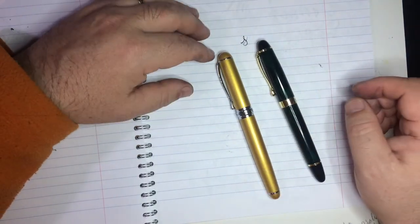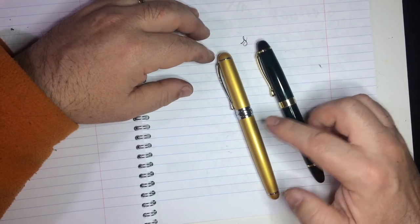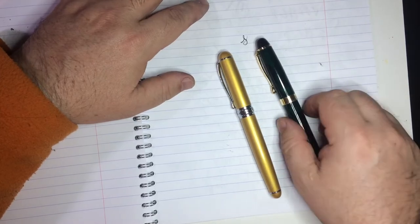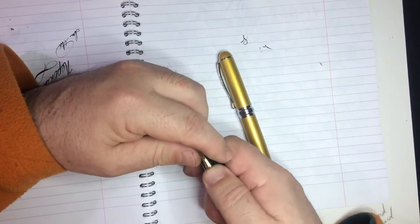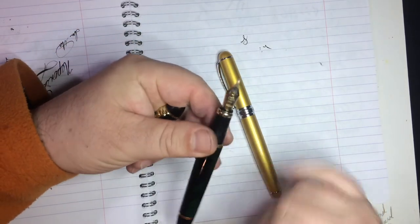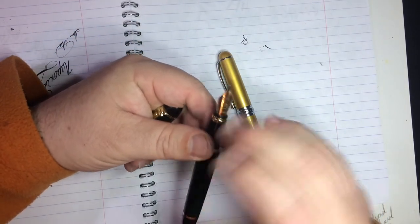This one is my Jinhao 450 and this one is my Jinhao X750. This X450 has been around with me for about five years and it sports a tripod grip and it has a fine nib. It's not really a fine nib, but you can see it's kind of beat up. The gilding is coming off on this.